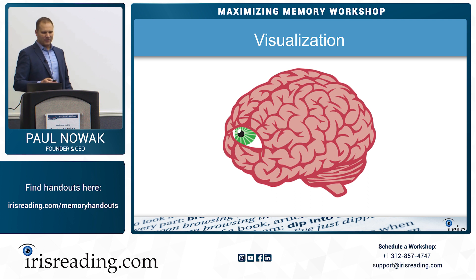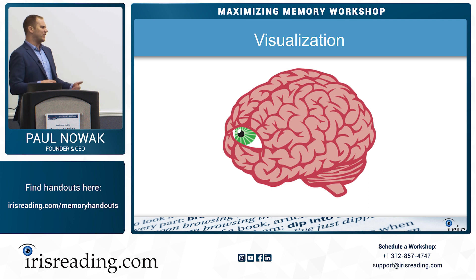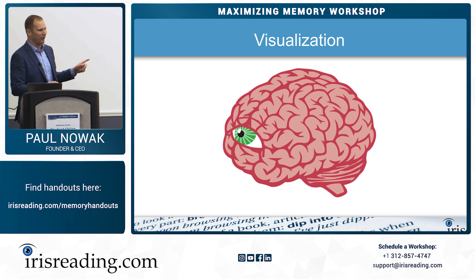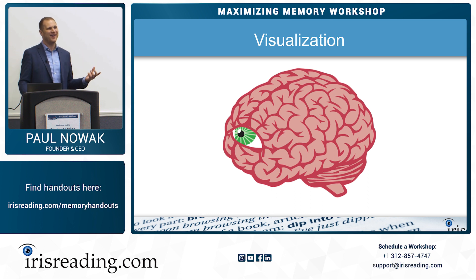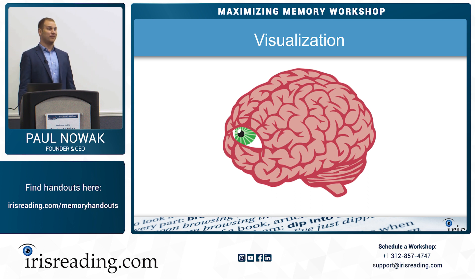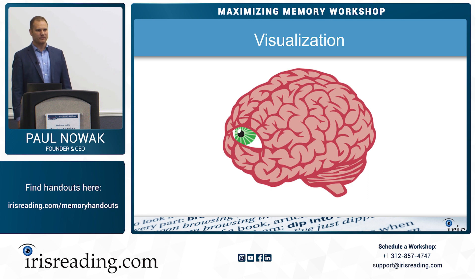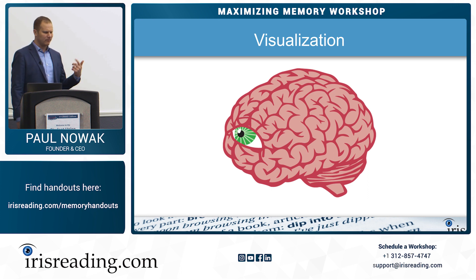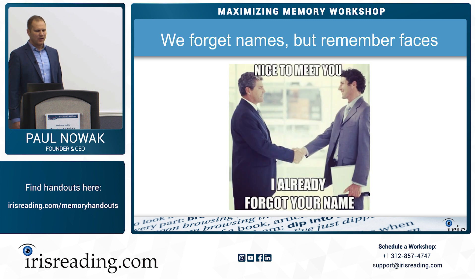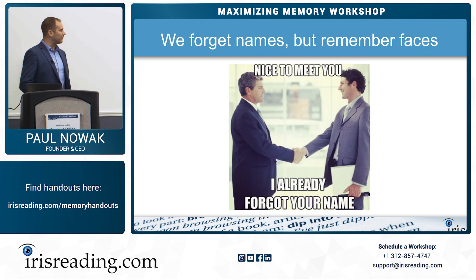They sometimes refer to this as the mind's eye — that's why there's this image of a brain with an eyeball on it. Your mind's eye is just your ability to see something in your head. If I say picture a cup of coffee, you could think about what that might actually look like. So visual information is a key part of memory.